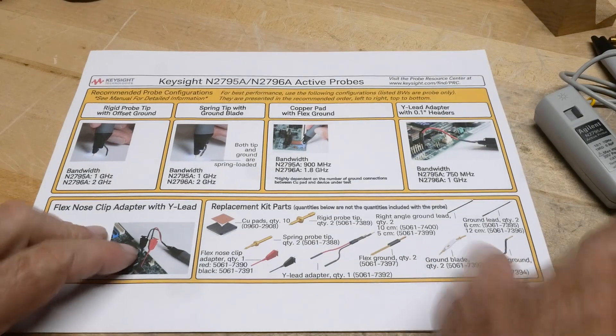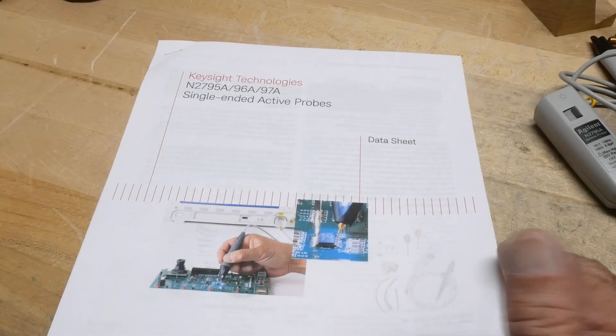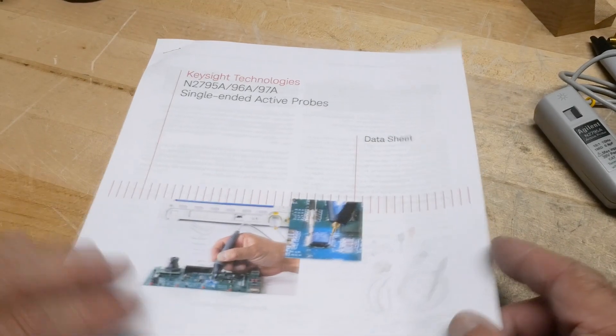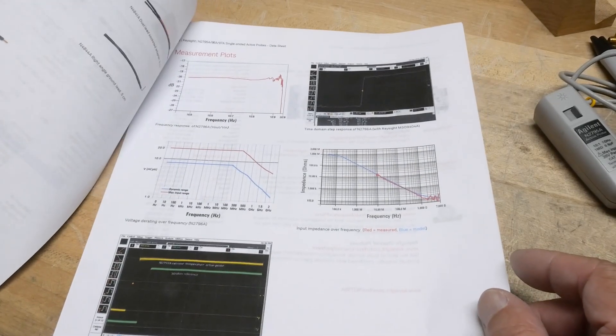And yeah, it's just an introduction. Most of the big scope manufacturers have things like this. Tektronix has a whole bunch, Roden Schwartz. I think even Rigol has one now.